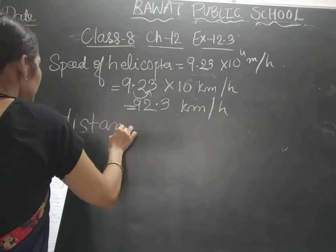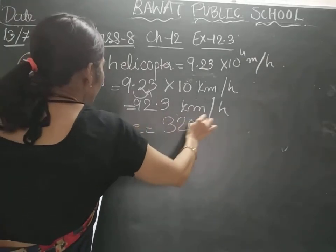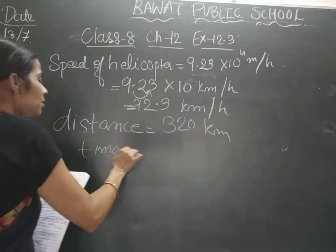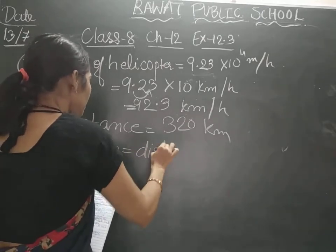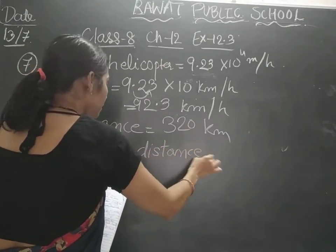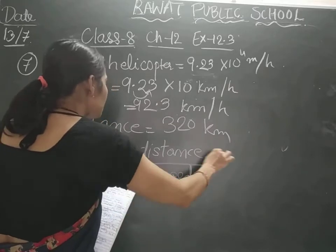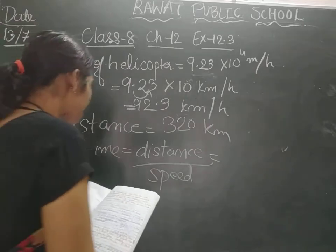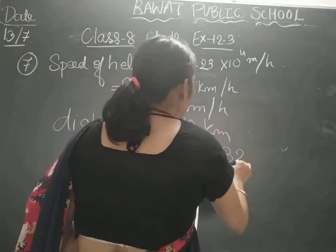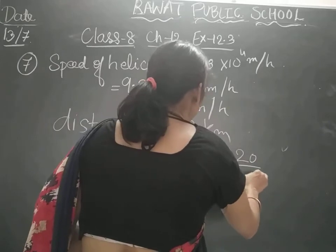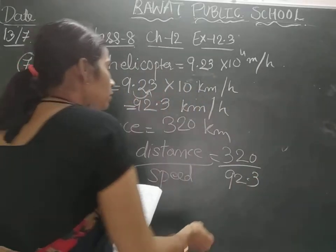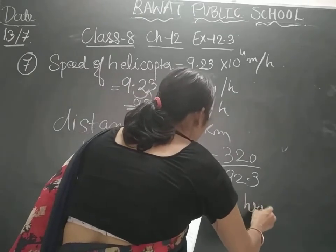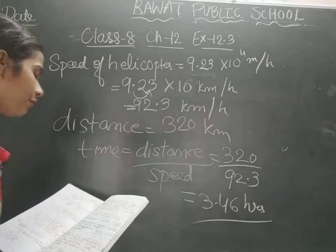The distance given to us is 320 kilometers. Using the formula: time equals distance divided by speed. Speed is 92.3 kilometers per hour and distance is 320 kilometers. So the time will be 3.46 hours.